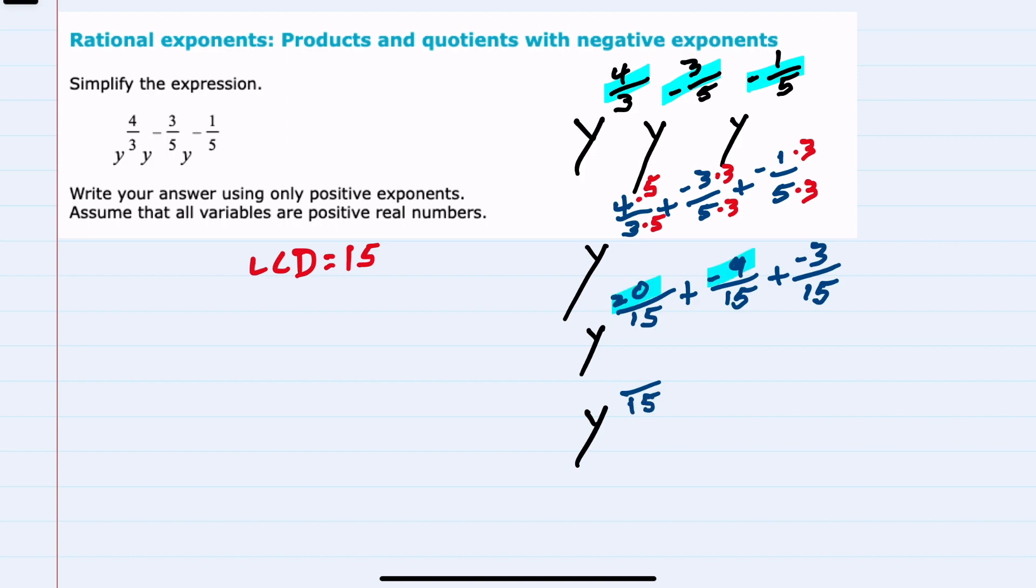Adding 20 and negative 9 gives us 11. Subtracting 3 gives us 8. And this fraction doesn't reduce, so we've simplified as much as possible. And since we ended up with a positive exponent, there's nothing that we have to do to change a negative exponent to a positive, so this is our final simplified expression.